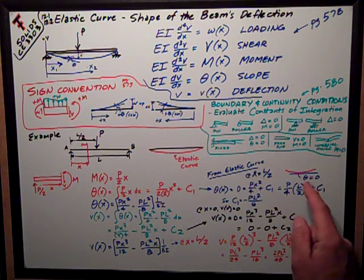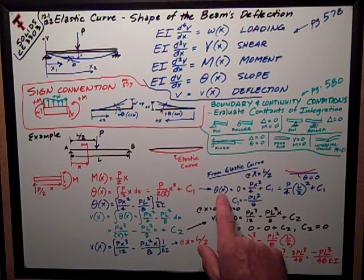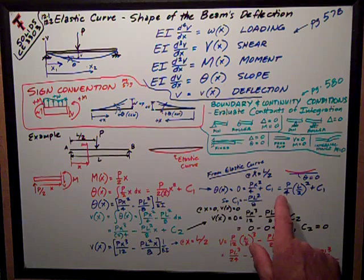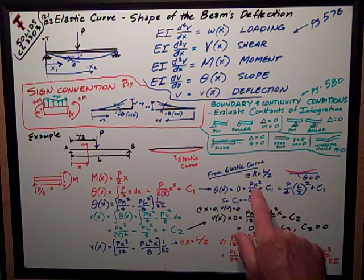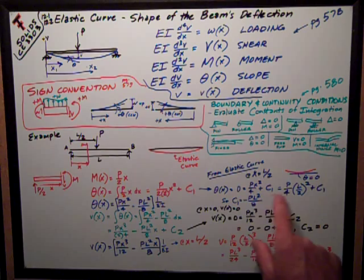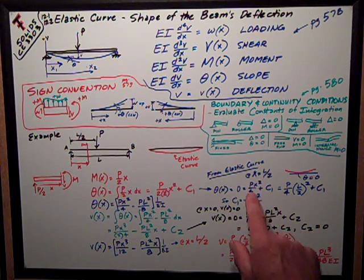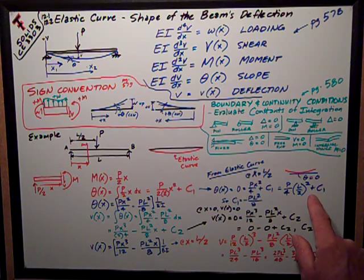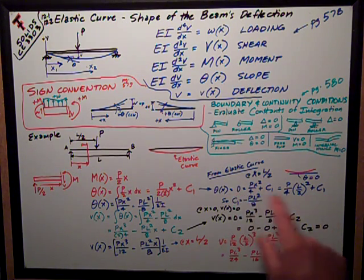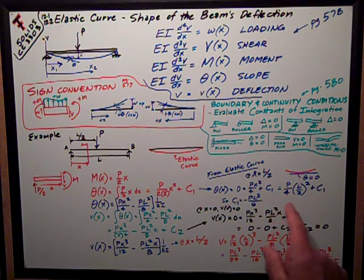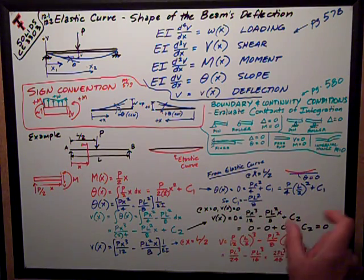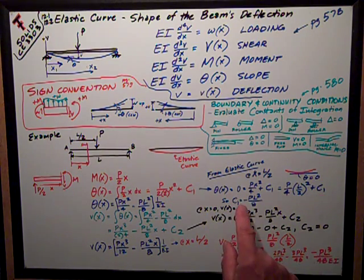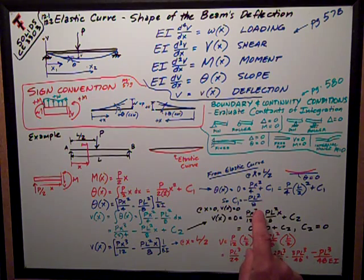So I substitute that in here. I say the slope of this function of X is equal to zero. The function's that. But I want to plug in L over 2 for X here. And so I get P over 4 times L over 2 squared instead of X squared plus C1, and that's equal to zero. Rearranging that, I get C1, this constant of integration, is equal to negative PL squared over 8.